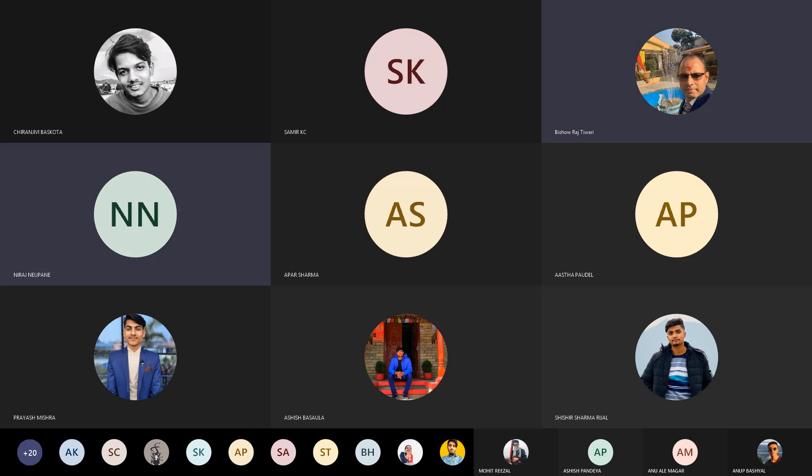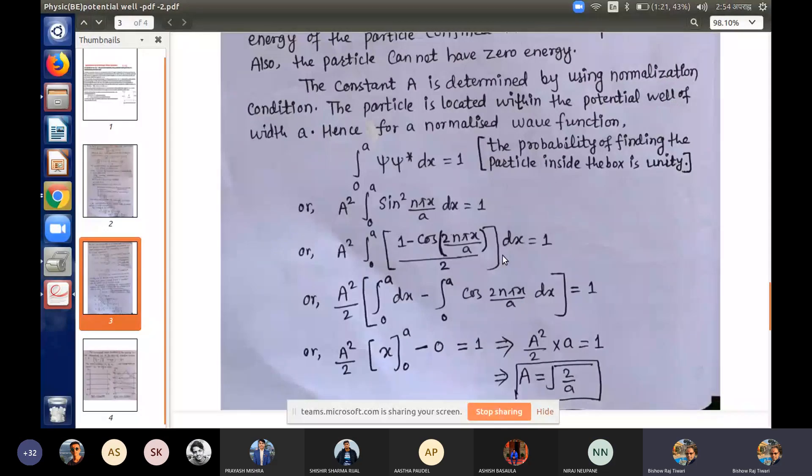The normalization condition: the integral of psi star psi dx is equal to 1. In a one-dimensional case, we have the integral from zero to a.